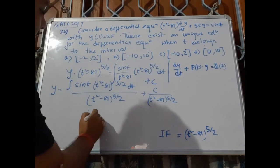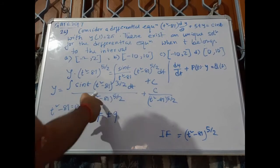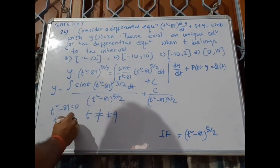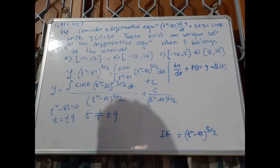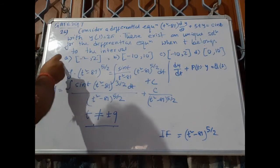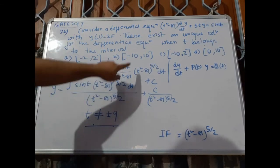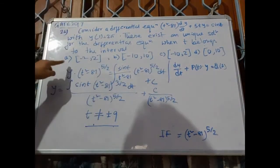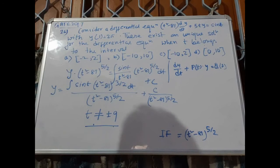From the solution, we can observe that this will have a solution only if t² - 81 is not equal to zero, meaning t must not equal ±9. So for the differential equation to have a solution, t must not equal ±9. Looking at the options, ±9 lies within interval B and near interval C. But in the interval (-2, 2), we don't have +9 or -9. So the correct option is option A: (-2, 2).